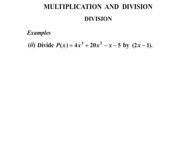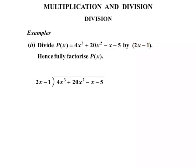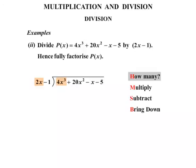Moving on to the next one: we need to divide P of x equals 4x cubed plus 20x squared minus x minus 5 by 2x minus 1, and again fully factorize this polynomial. Let's write that down — dividing through by 2x minus 1. HMS bring down: how many, multiply, subtract, and bring down. The leading term this time is 2x, going into 4x cubed. So 2x into 4x cubed is 2x squared. Then we multiply 2x squared by 2x minus 1 to get 4x cubed minus 2x squared.